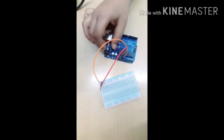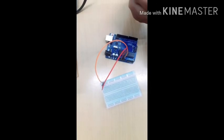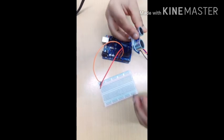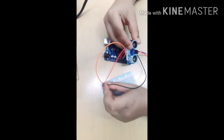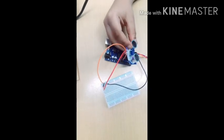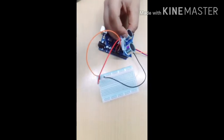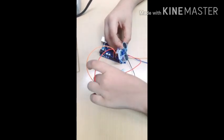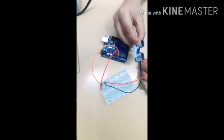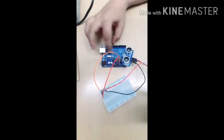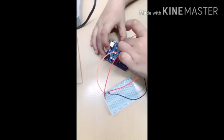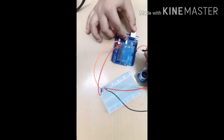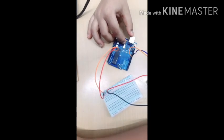Next we will connect ultrasonic sensor through breadboard. See, first VCC pin goes to positive and ground pin goes to negative, and trigger pin goes to 10th pin and echo pin goes to 11th pin.